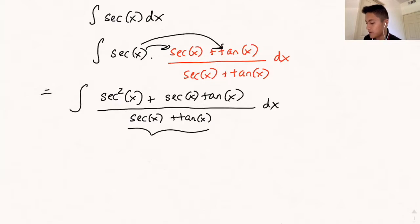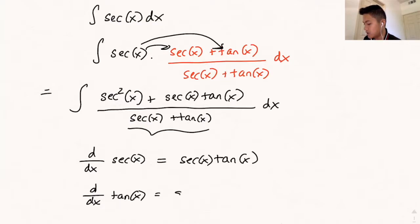Let's recall that the derivative of secant of x is just equal to secant of x tangent of x. And the derivative of tangent of x is just secant squared of x.